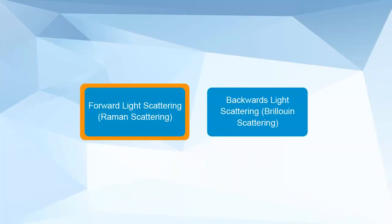Forward light scattering, Rayman scattering, and backward light scattering, Bruine scattering, are two additional scattering phenomena that can occur in optical materials under high power conditions.